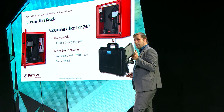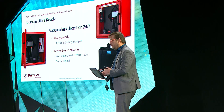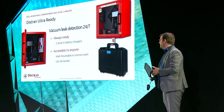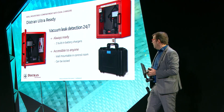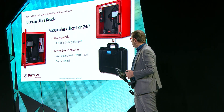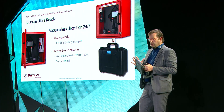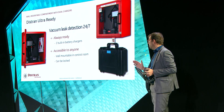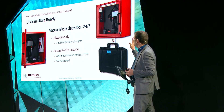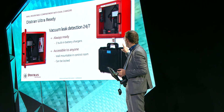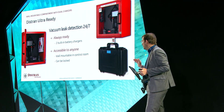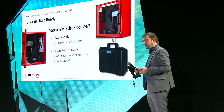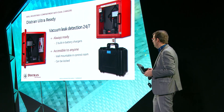In addition to the camera, we also offer an alternative product called Ultra Ready. The idea is to have the camera always available during your manufacturing processes. This red box contains one camera, two batteries, and two chargers, allowing anyone to pick up the technology and conduct reliable inspections quickly.